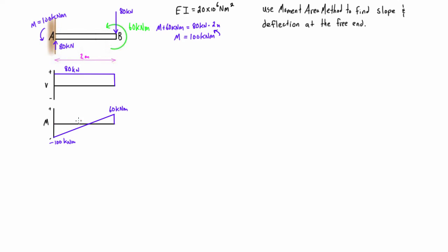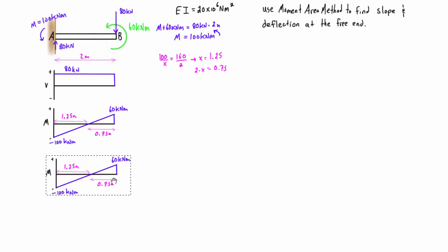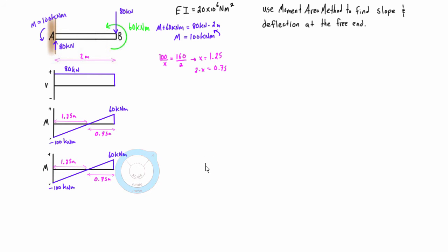Once we have the bending moment diagram, we want to find some geometry — for example, where it crosses the axis. Then we make a copy of the bending moment diagram right below it, and this becomes our M over EI diagram. We divide every point on the graph by EI, our flexural rigidity, which is 20 times 10 to the 6 Newton meters squared.